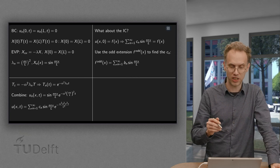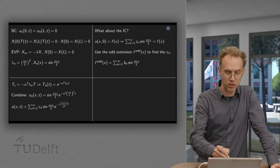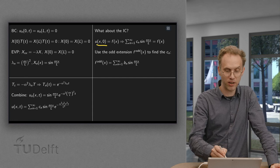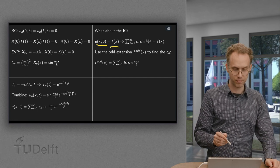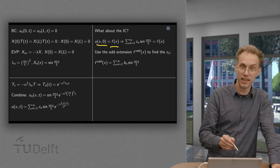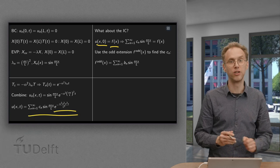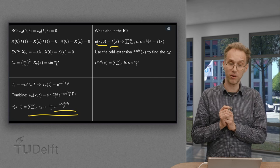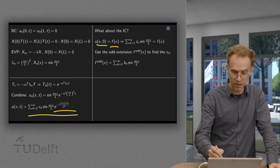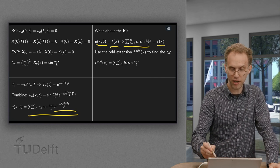So what about the initial condition? At time 0, u of X comma 0 is some function f of X. Now if you plug in T equals 0 over here, this exponential term drops out. You just get e to the power 0 equals 1. So we get this sum over here has to be equal to f of X.